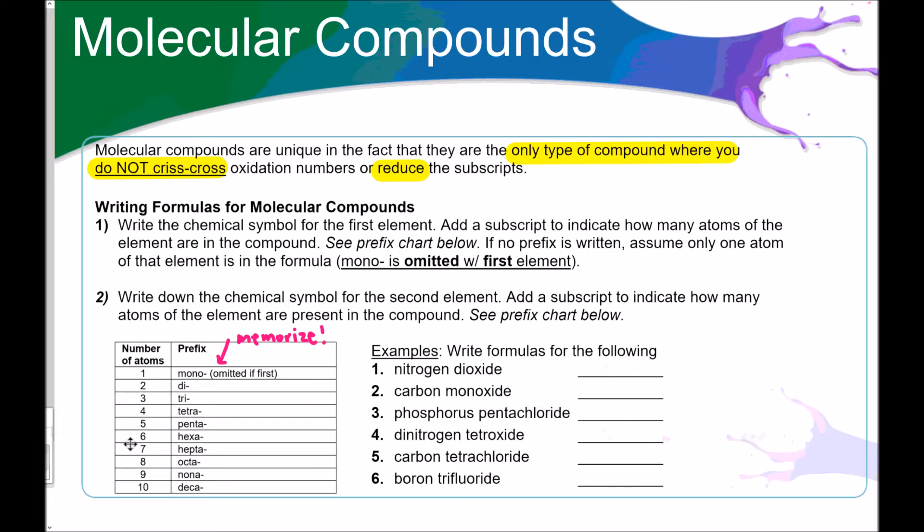So let's do some examples. If we have nitrogen dioxide, well there's no prefix for nitrogen, so there's just one of them. And then dioxide. Di means two oxygens. So NO2 is nitrogen dioxide. Carbon monoxide. One carbon mono, so one oxygen. Phosphorus pentachloride. Phosphorus is just one. Pentachloride means five chlorines. Go ahead and try to do the rest of these on your own by pausing the video. And when you come back, I'll help you out.